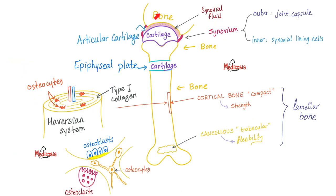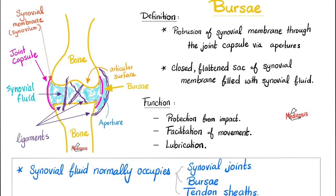By the way, if you want to learn more about bones and cartilages, please check out my biology playlist here on YouTube — I even talked about the Haversian system. Bursae — the definition: protrusion of the synovial membrane through the joint space via apertures. The synovial membrane will leave and will take some of that synovial fluid with it, outside the confinements of the joint capsule. So what's the bursa? It's a synovial membrane plus synovial fluid inside of it, both working outside the confinement of the joint capsule. Or you can say a bursa is a closed, flat sac of synovial membrane filled with synovial fluid.